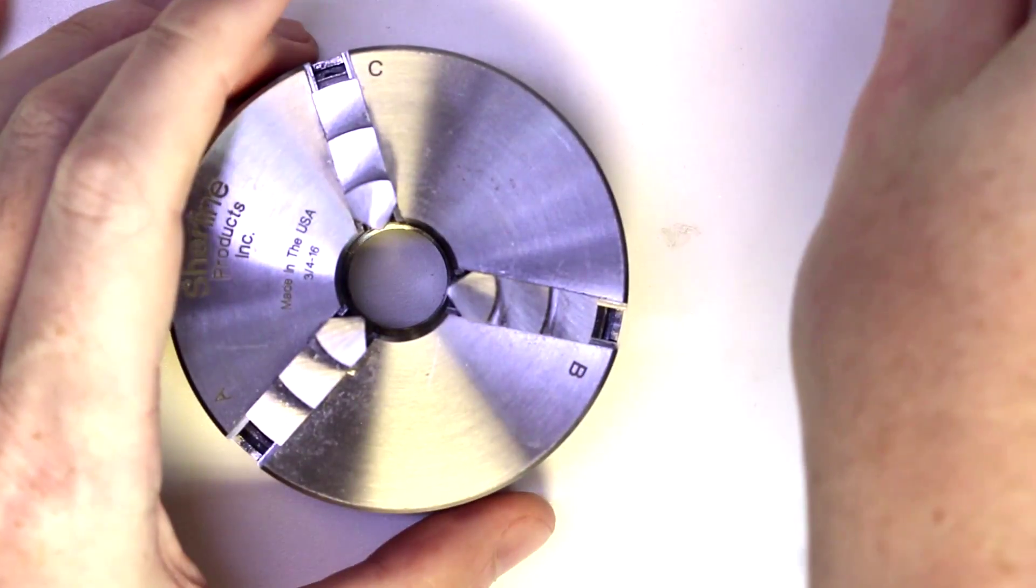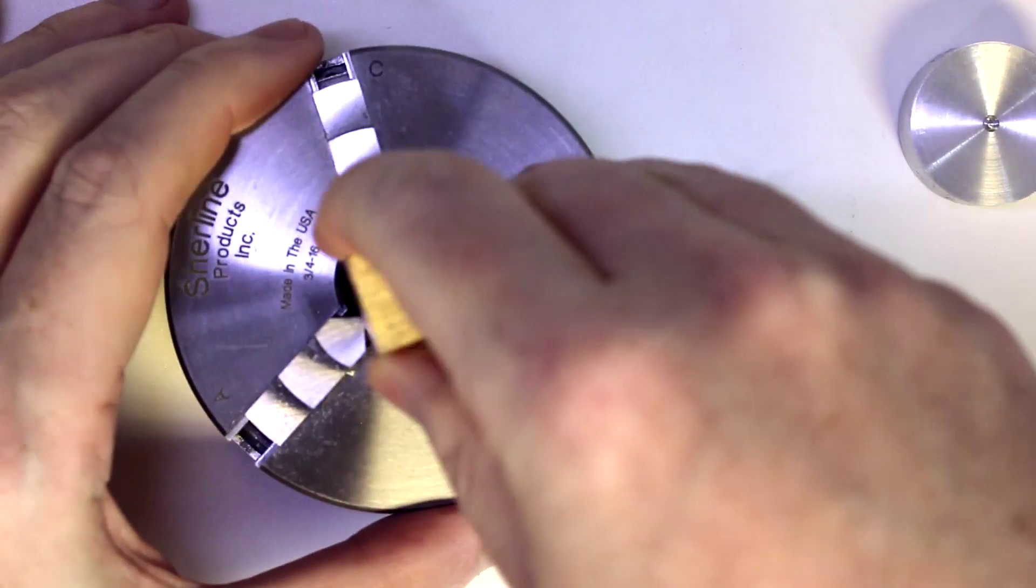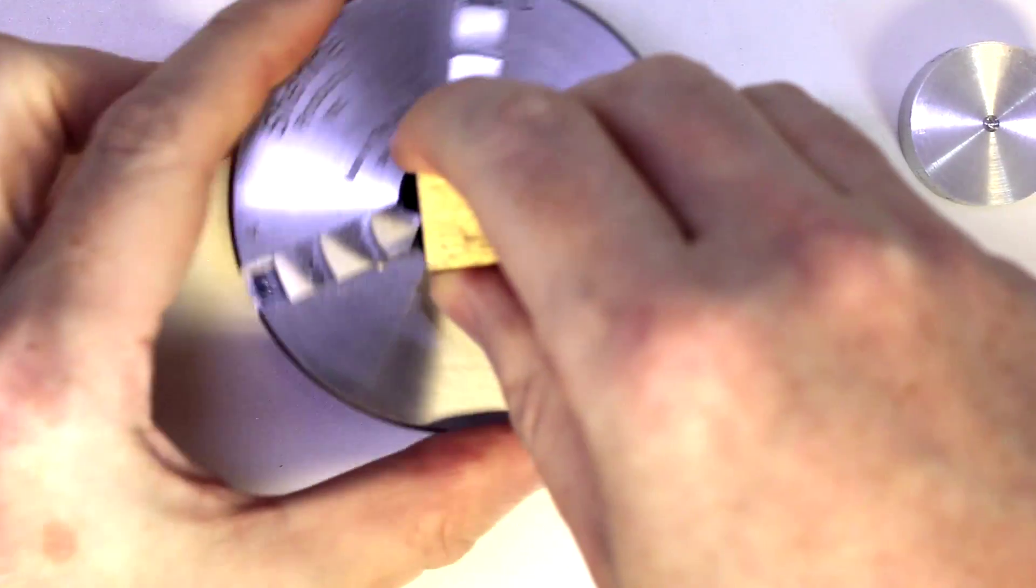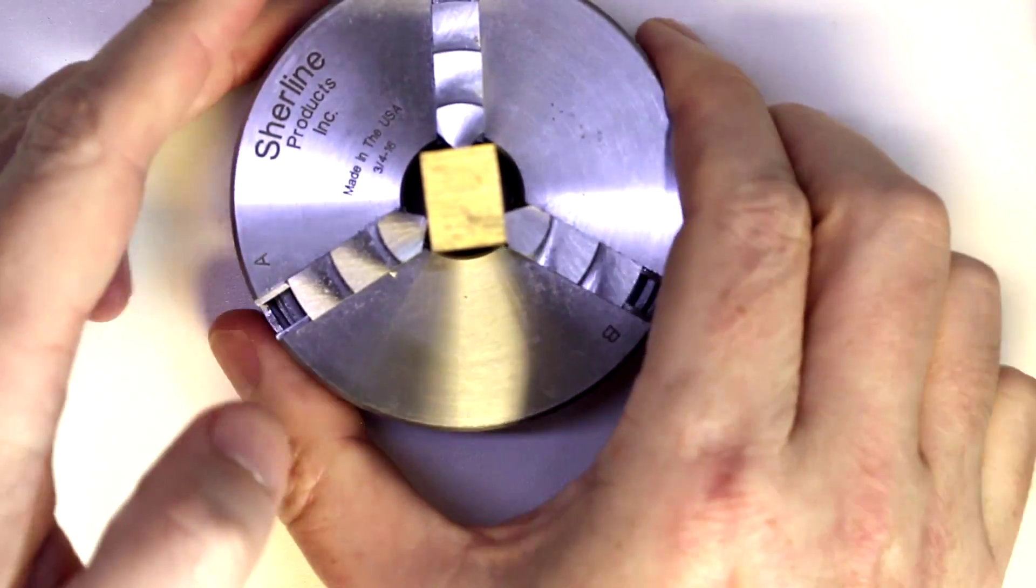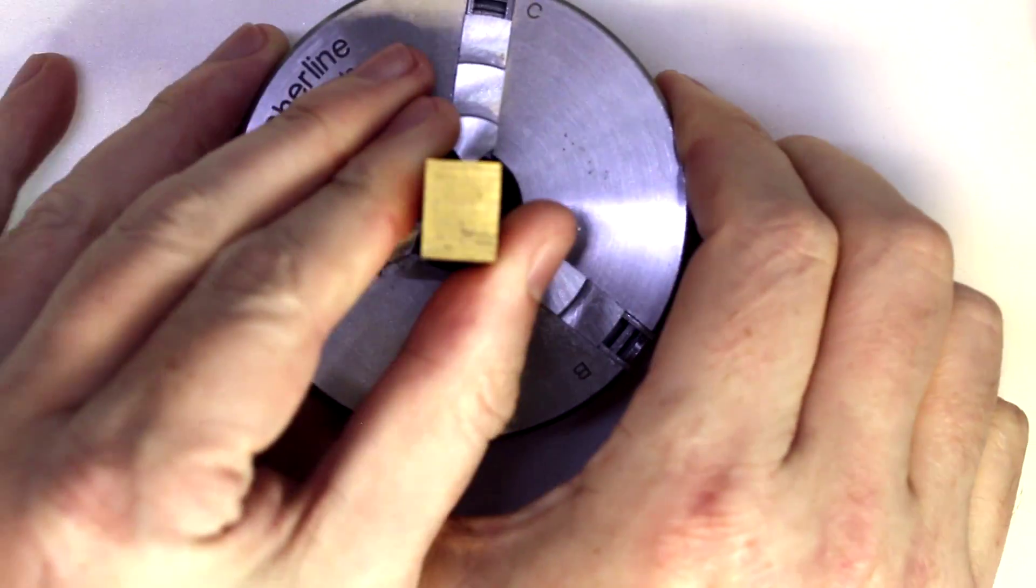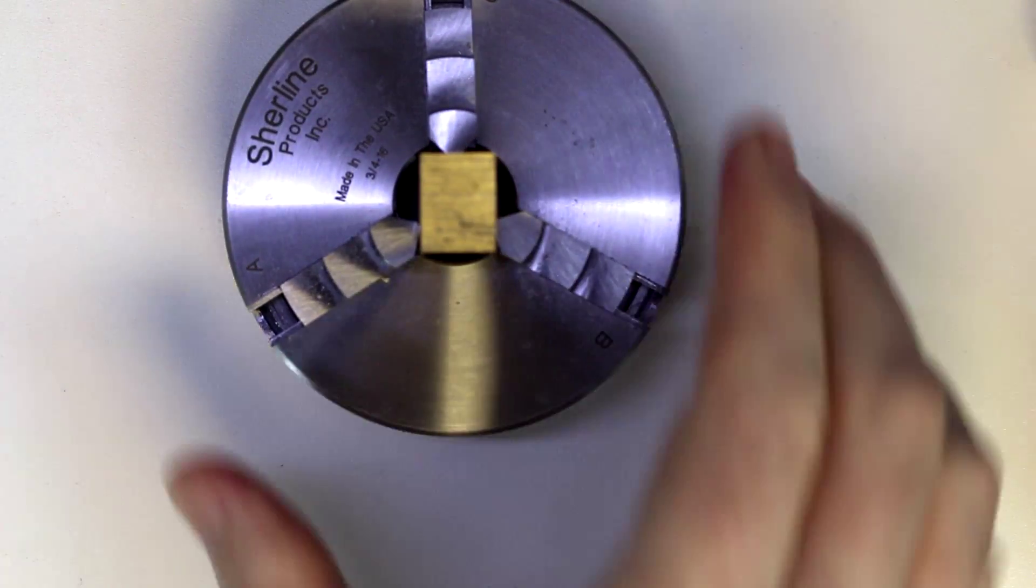Now you will see in some instances where people will chuck a square in the three-jaw. As you can see, it's capable of doing it, but this usually isn't the best case scenario.